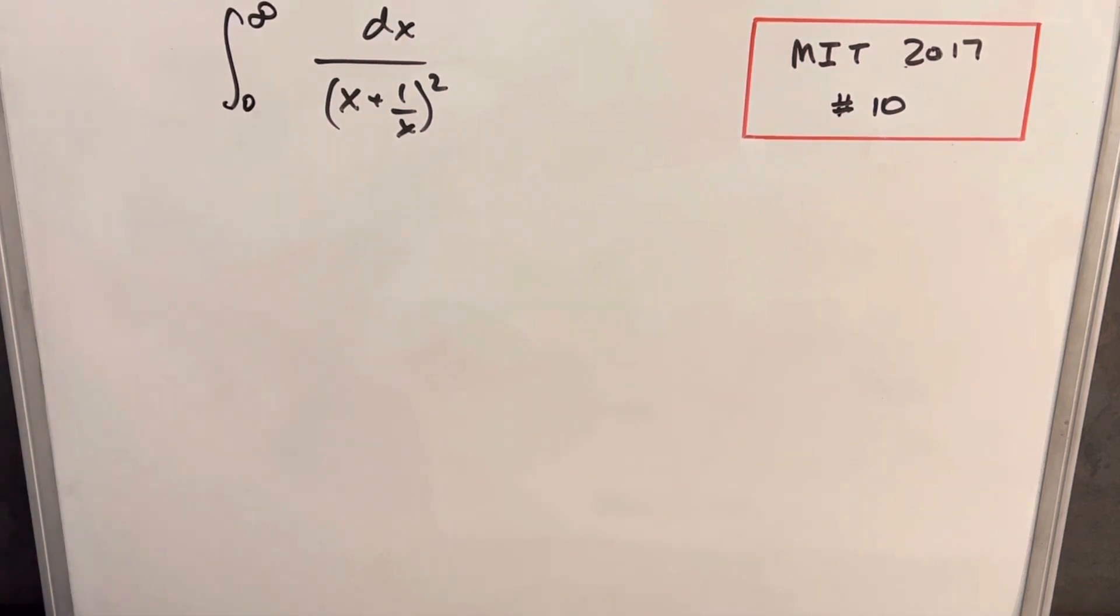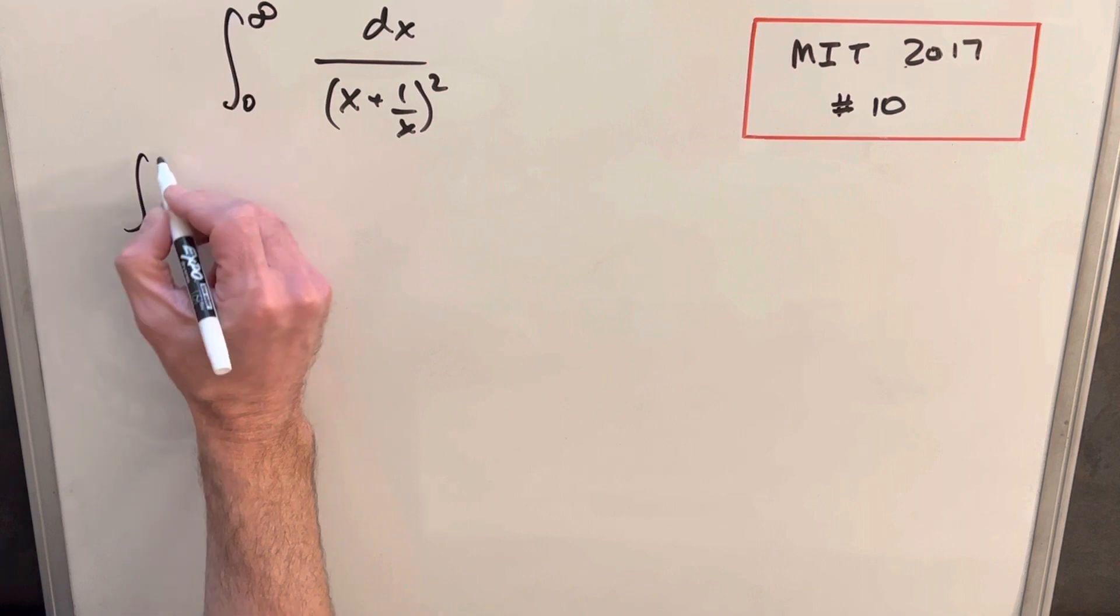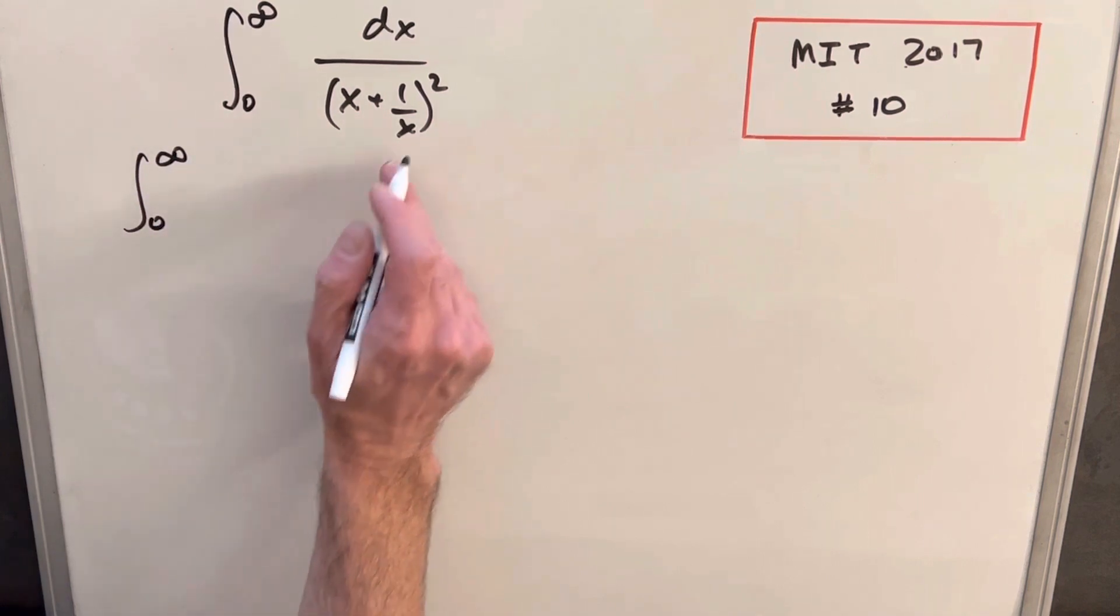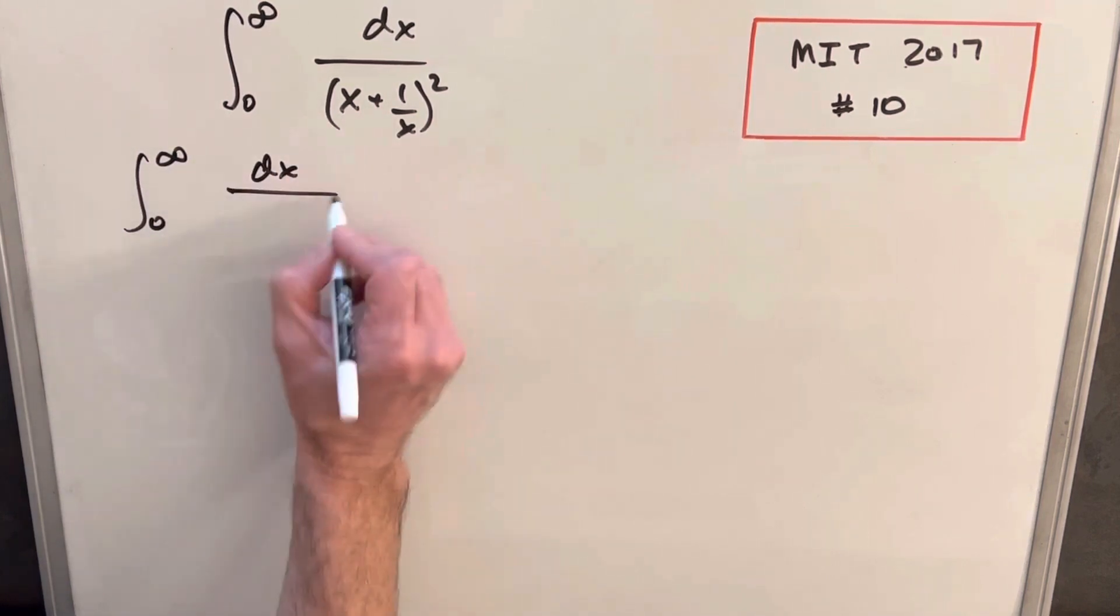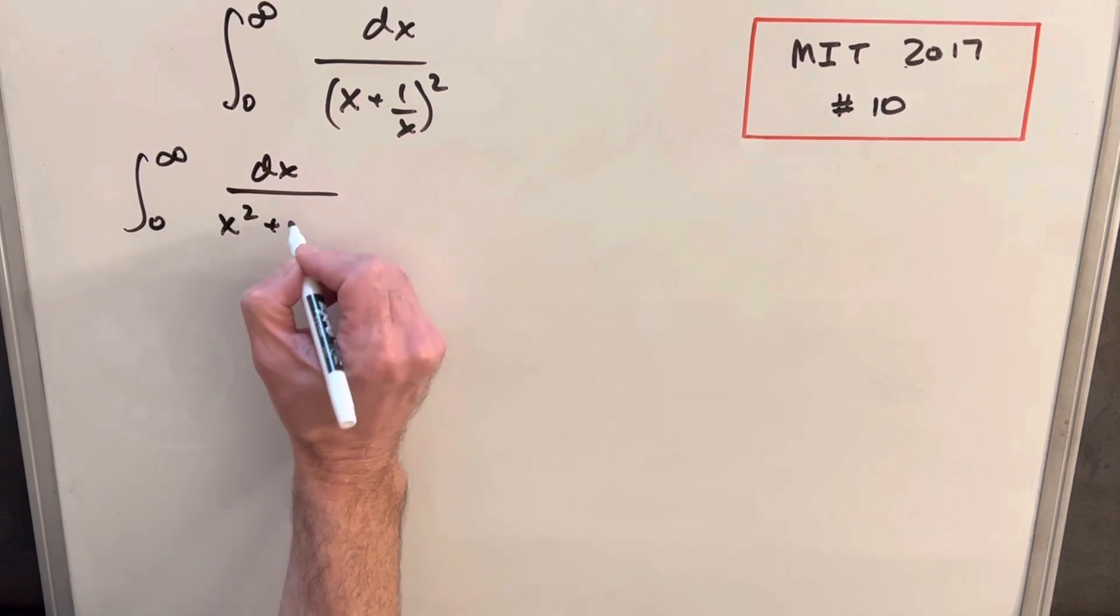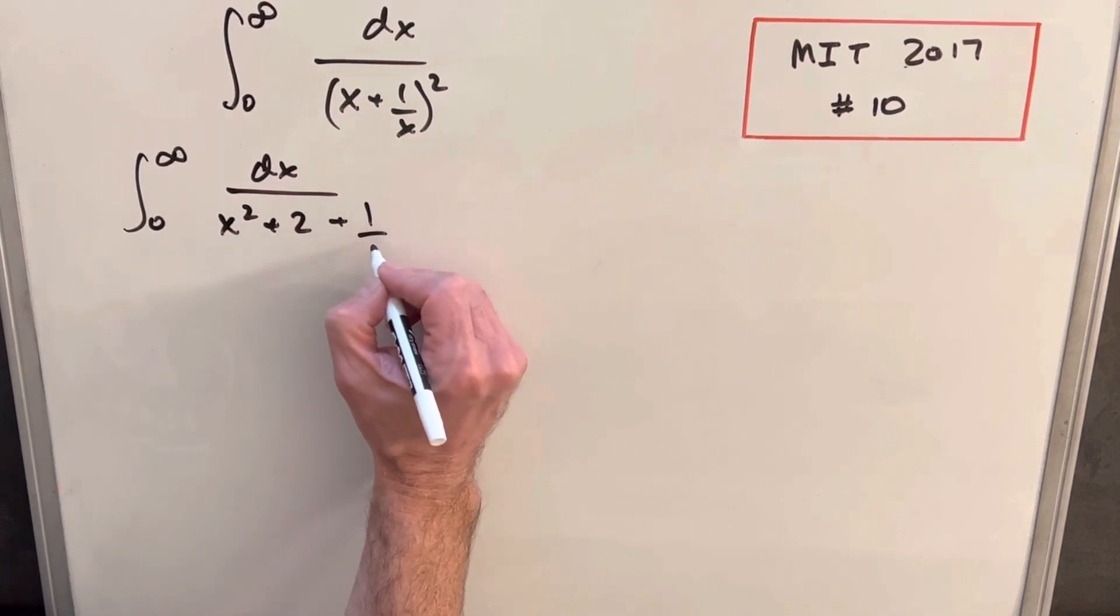Now, there is an alternate, but let me just show you this way first. So what we can do is just expand this by multiplying it out and we have x squared plus 2 plus 1 over x squared.